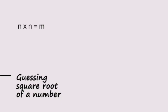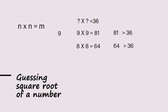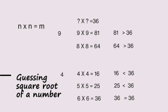We are going to find the square root of a number by guesswork. We know that n into n equals m. For 36, I am guessing 9. 9 into 9 is 81, but 81 is greater than 36. If we try 4, 4 into 4 is 16, and 16 is less than 36. We can try 5, which gives 25, less than 36, then we can try 6.